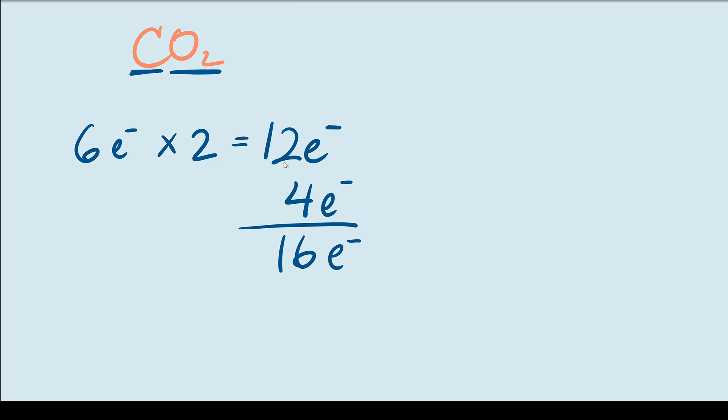Now let's start by drawing this molecule. Carbon is the central atom because it's the least electronegative element in this molecule. And bonded to it, we have 2 oxygen atoms.